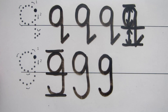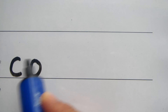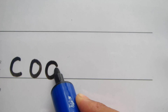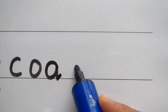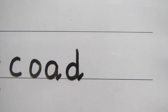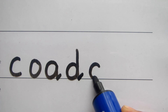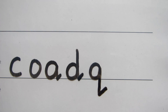Let me quickly summarize. The letter C: up, around, to the line, stop. The letter O: start to the side, up, around, back down to where you started. The letter A: start there, go up, around, to the line, back up, down, and a little flick. The letter D: like the A, but continue straight up to the top, then back down and a little flick. The letter Q: like the A, back to the line, back up to where you started, stop there, straight down, continue on, and a line across.